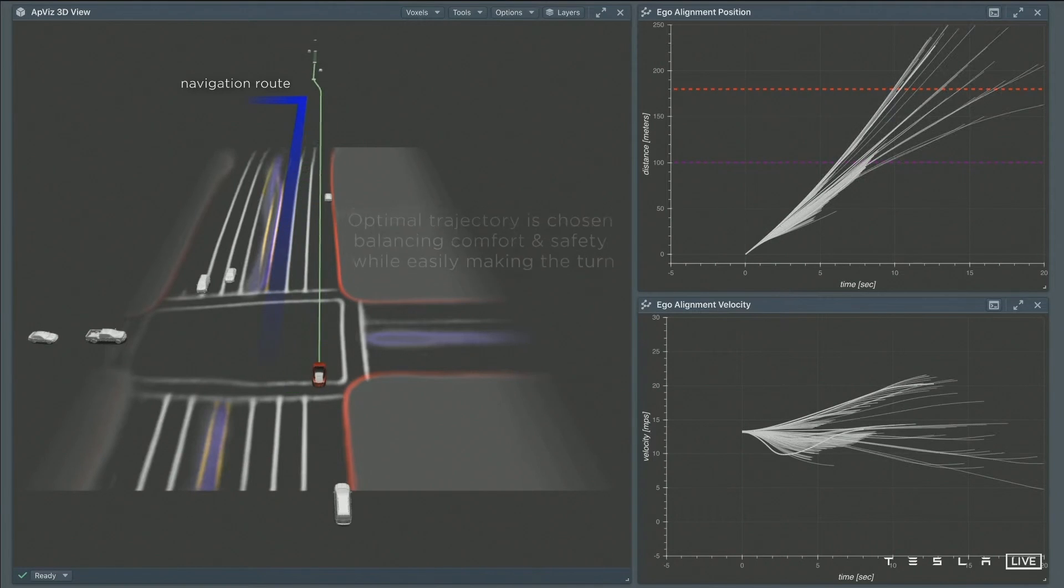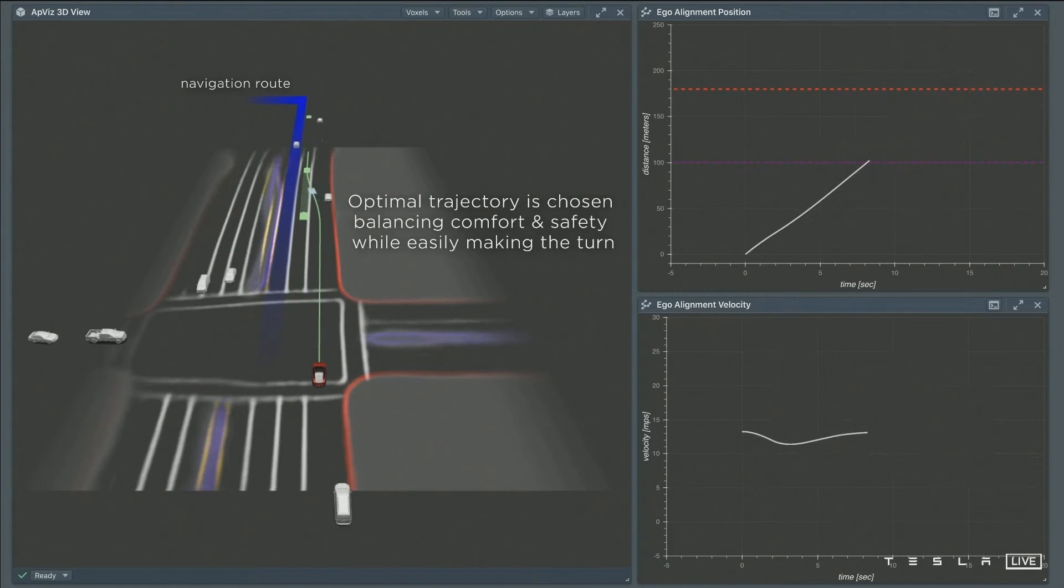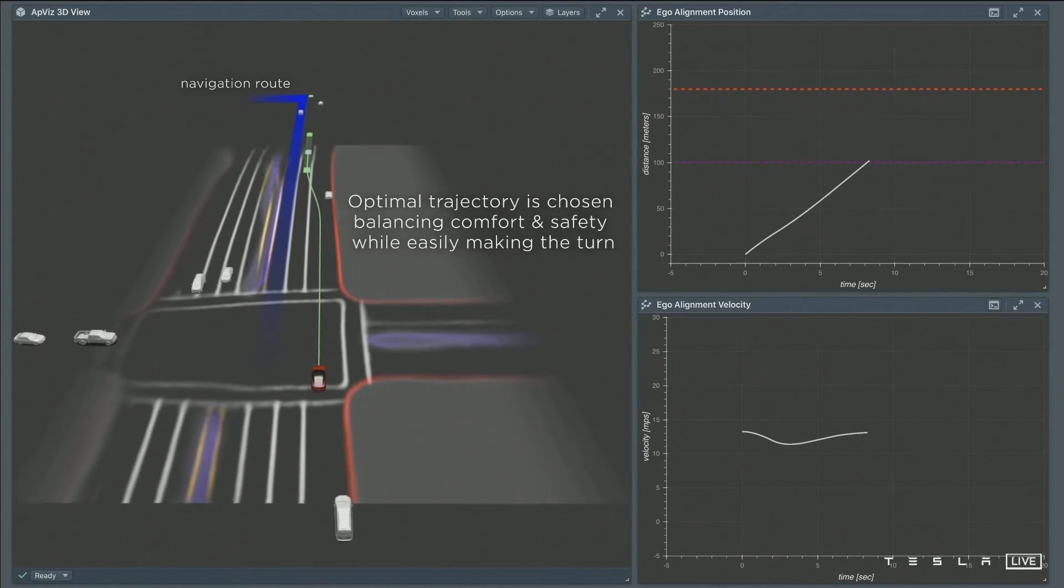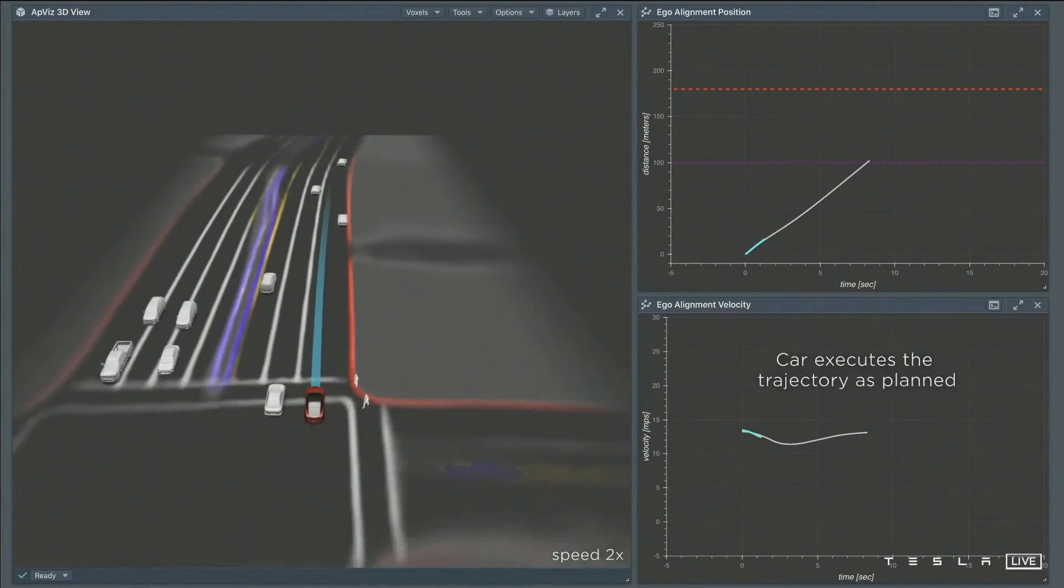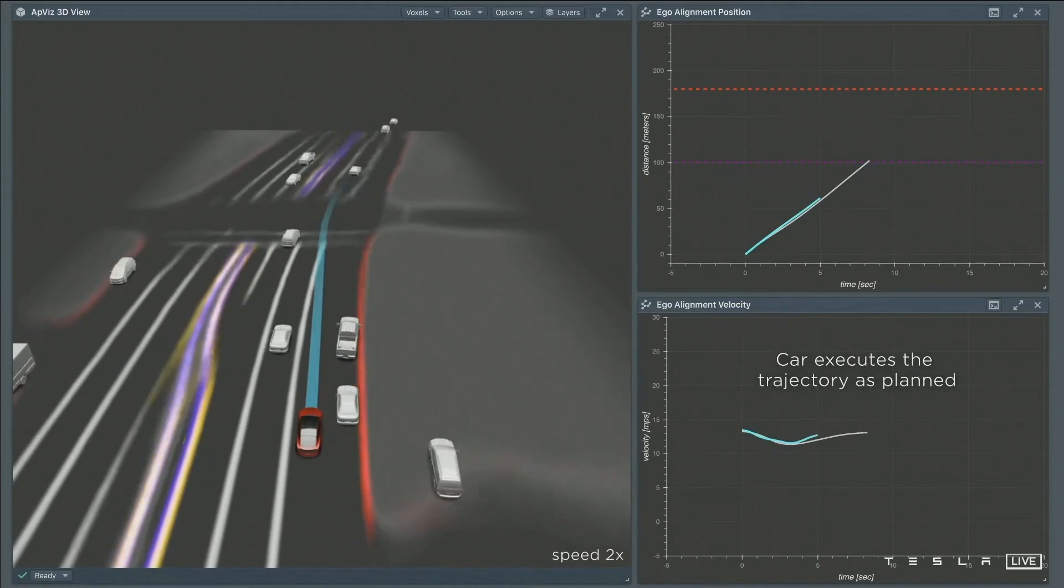Because these are all physics based models, these features are very easy to simulate and in the end we have a set of candidates and we finally choose one based on the optimality conditions of safety, comfort and easily making the turn. Now the car has chosen this path and you can see that as the car executes this trajectory it pretty much matches what we had planned.